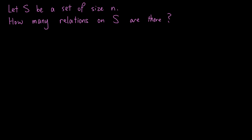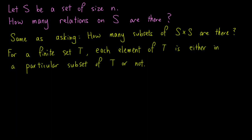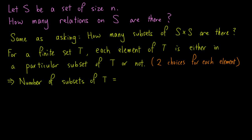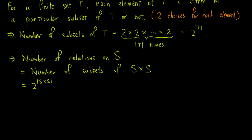Now let S be a set of size N. We want to find the number of relations on S. Recall that a relation is a subset of S cross S, so this is equivalent to finding the number of subsets of S cross S. It boils down to finding the number of subsets of a finite set T. Observe that each element of T is either in a particular subset of T or not, so we have two choices for each element. By the multiplication principle, the number of subsets of T equals 2 multiplied by itself for the size of T number of times, so the number of subsets of T equals 2 to the power of the size of T. Hence, the number of relations on S, which is the number of subsets of S cross S, is 2 to the power of the size of S cross S, which equals 2 to the power N squared.